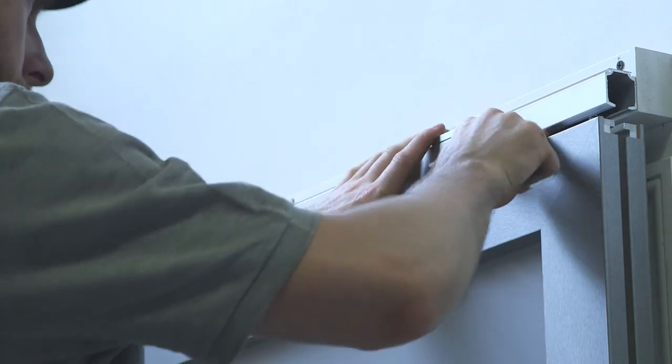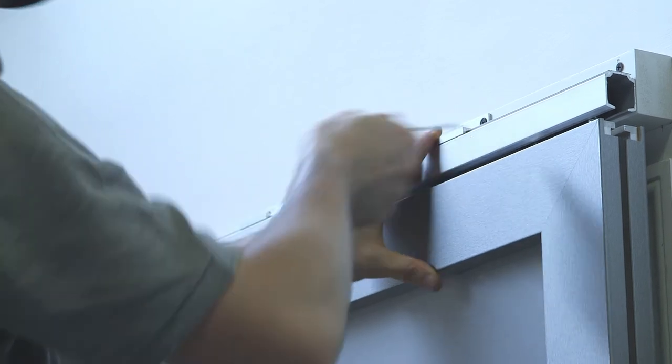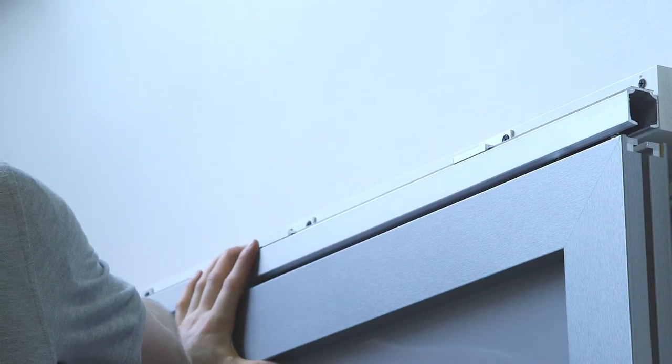Tighten lock nuts after you've checked door is level. If height needs adjustment, bolts are threaded up or down on each side to change height.